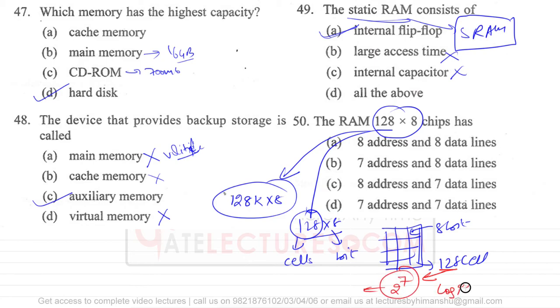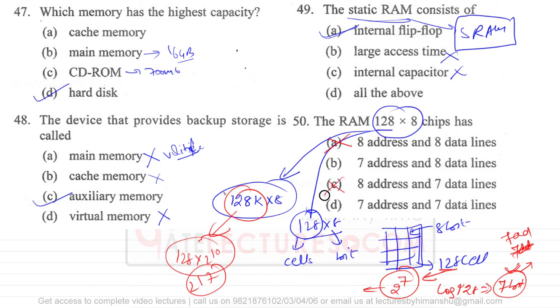When we say 128K, it is 128 into 2^10, which is 2^17 cells. But because they are saying only 128 cells, we have 7 bits to represent the address. Therefore, address lines are 7, or we are going to have 7 address lines. So straight away, option A and option C are wrong. Because we have 8 bits of information, we are going to have 8 data lines. So option B is the correct answer; option D is also wrong for this question.